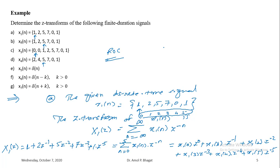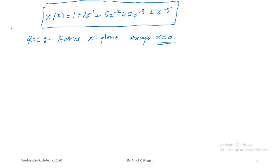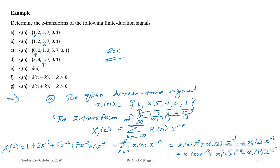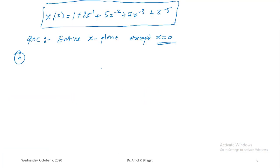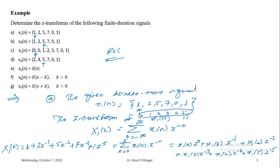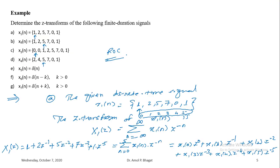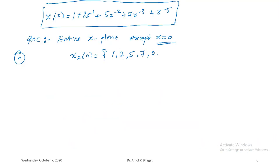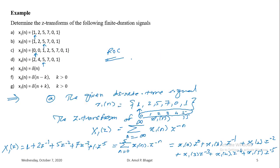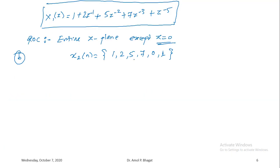For the second example, the discrete time signal x2(n) is given with its origin at n=0 where the value is 5. The signal extends from n=−2 to n=3, so the summation limits are taken from minus 2 to 3. Substituting these limits into the Z-transform formula gives terms with positive and negative powers of z.